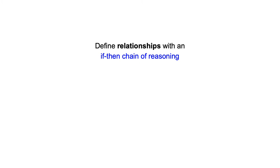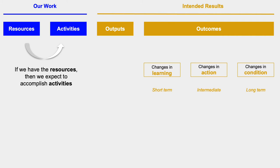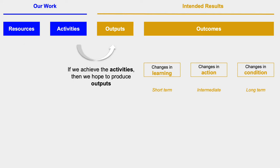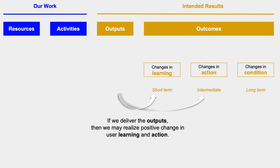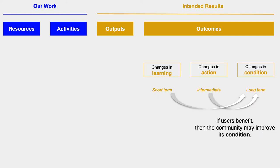The last element is the relationships between the work and the intended results. We can use an if-then chain of reasoning as follows: if we have the requisite resources, then we expect to accomplish the planned activities. If we achieve the activities, then we hope to produce the intended outputs. If we deliver the outputs, then we may realize the outcomes of positive change in user learning and action. And finally, if users benefit, then the community may improve its condition.